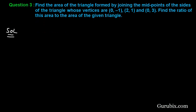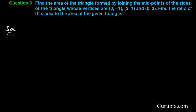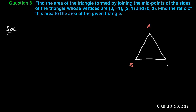Let us solve the question. First of all, let us draw a rough sketch of the given triangle. Let the coordinates of this triangle be A, B, and C, where the coordinates of A are (0, -1), B are (2, 1), and C are (0, 3).